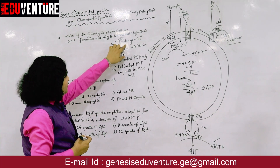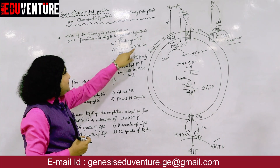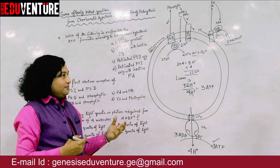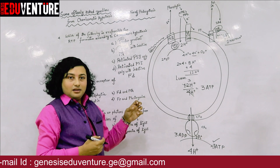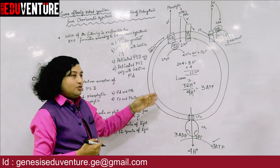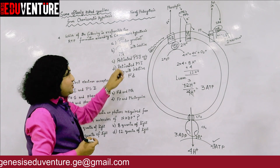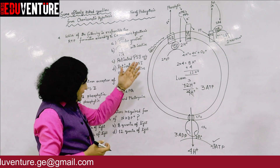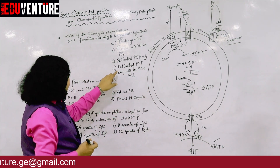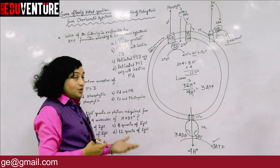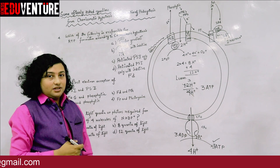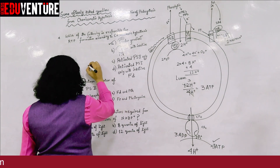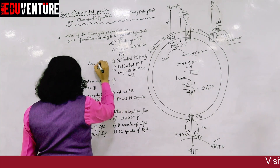Checking the options: proton gradient — yes; photons with inactive plastoquinone — no, inactive plastoquinone means no hydrogen pumping; activated PS2 only — no, both PS1 and PS2 are required for non-cyclic photophosphorylation; activated PS1 only — no, PS2 is also required. The correct answer is proton gradient — option A.